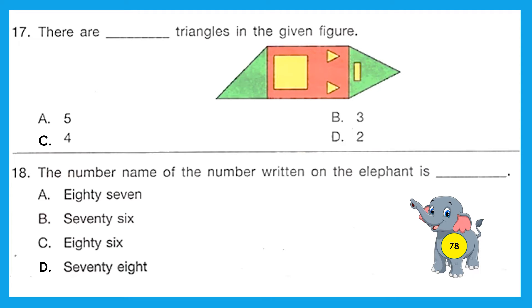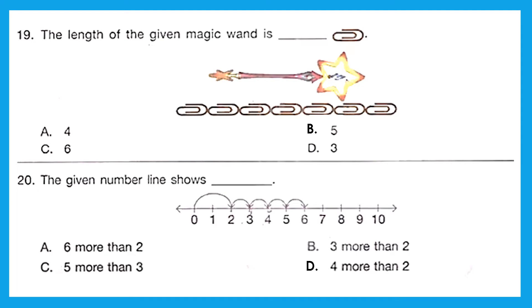Question 17: There are how many triangles in the given figure? So let's count the triangles: 1, 2, 3, and 4. In total 4. Option C, 4 is the right answer. Question 18: The number name of the number written on the elephant is? It is 78. Option D is the right answer.